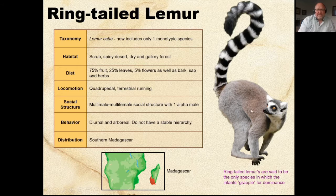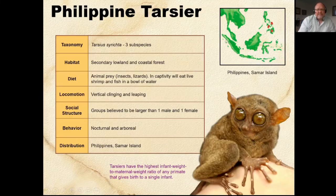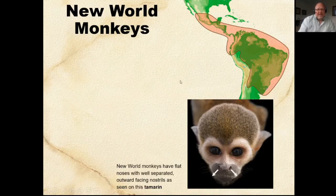The ring-tailed lemur — that's King Julien, you all know him. The ruffed lemur is King Julien's security guard. The Philippine tarsier is small and found in the Philippines. The slender loris is found in India and has exceptionally mobile joints that allow it to move swiftly when alarmed. That's mainly for interest's sake — what you mainly need to know is the prosimians as a group.